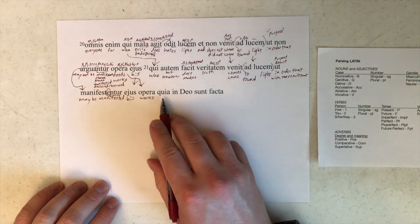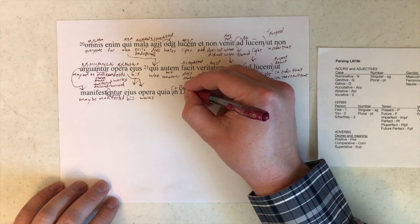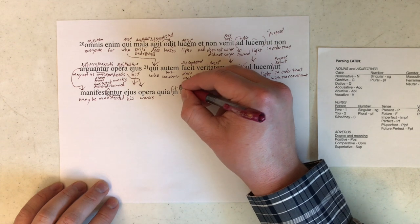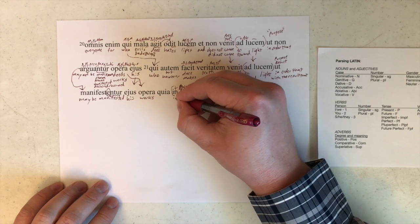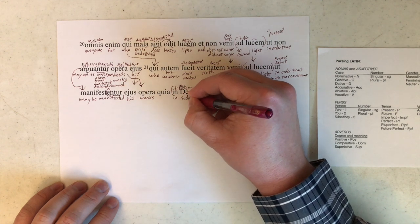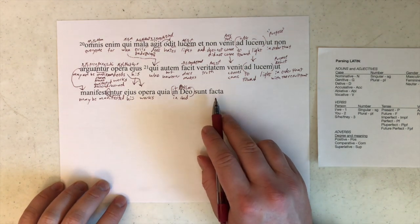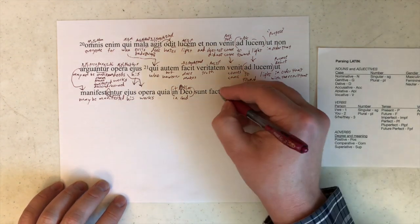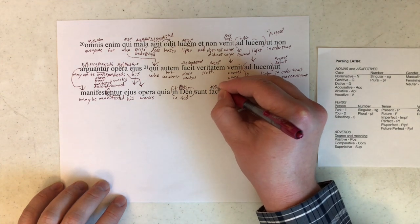Quia, because, or that, in deo, plus the dative here, dative, no, not dative, that's Greek, ablative, singular, masculine, in god, sunt facta. Facio facere feci factum. A right there tells us that this is a nominative plural neuter.